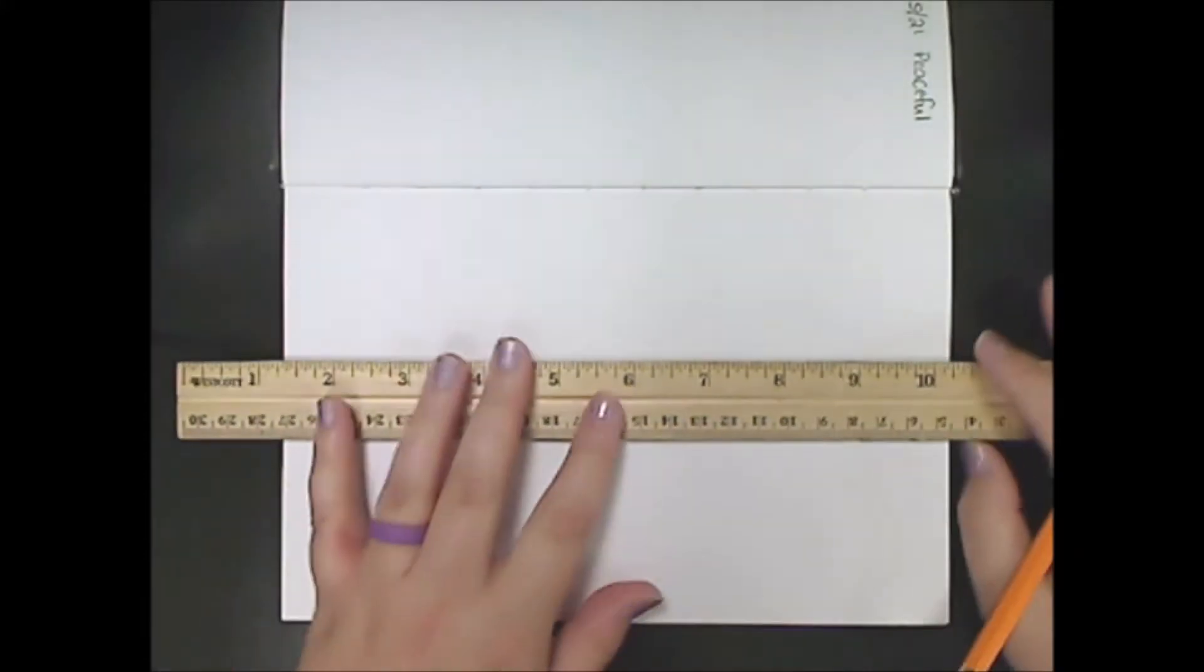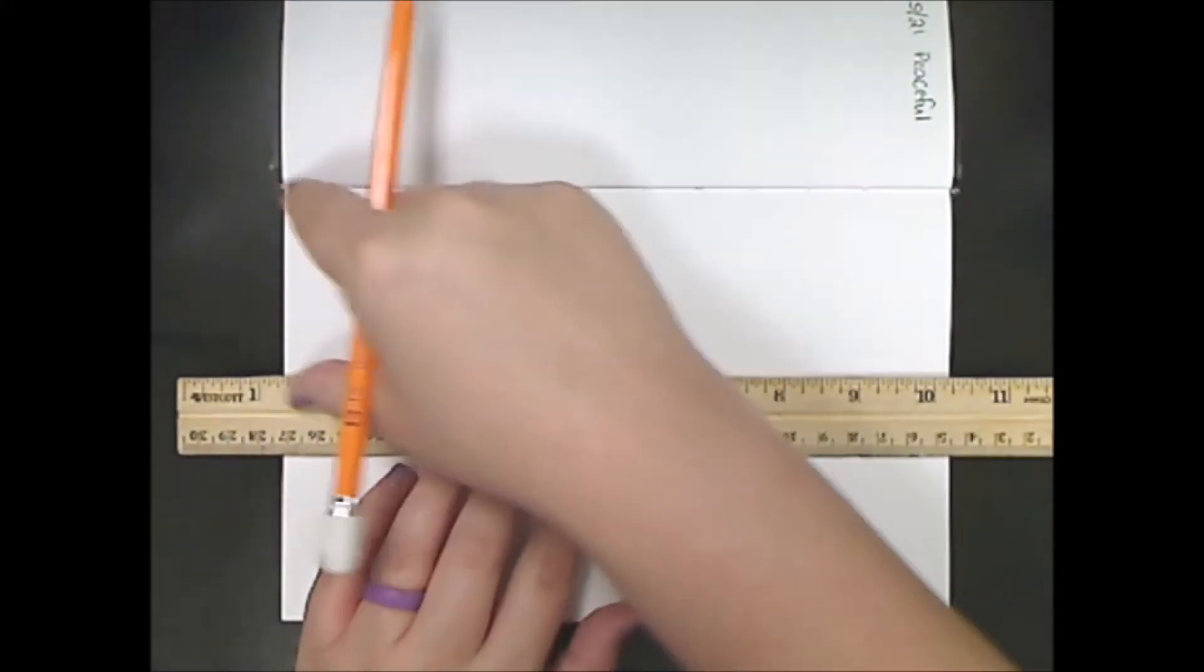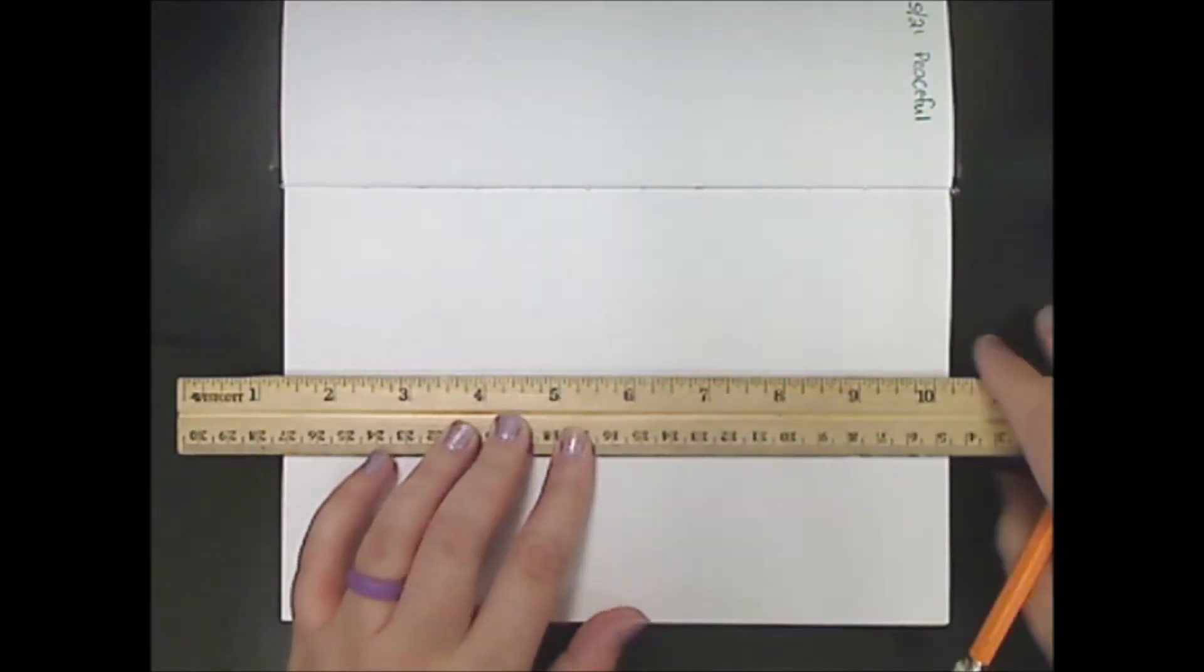You're going to start with your horizon line, so make sure your ruler is parallel to the crease of your paper. Then make a dot somewhere on the horizon line.